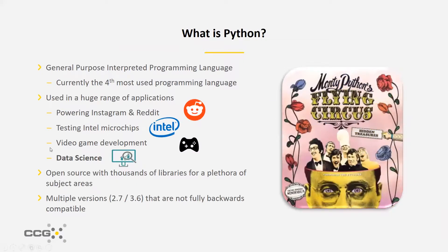Python was released in 1991, and it is now the fourth most widely used programming language around the world. It's a general purpose language, which means it's used for just about anything — not specifically data science. Data science is just one particular use case for it. It's interpreted, which means as opposed to languages that are compiled beforehand, Python is compiled and converted as it goes. It's used in a huge range of applications, powering giant platforms such as Instagram and Reddit.